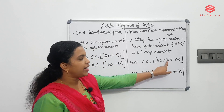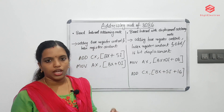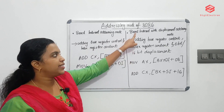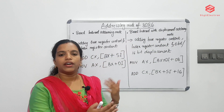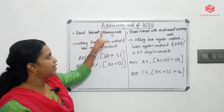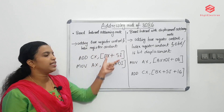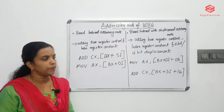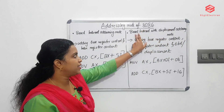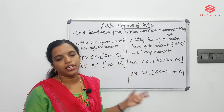The eighth one is based indexed with displacement addressing mode. Here the effective address is based register content plus index register content plus an 8-bit or 16-bit displacement. For example, MOV AX, [BX + DI + 08H] or ADD CX, [BX + SI + 16].